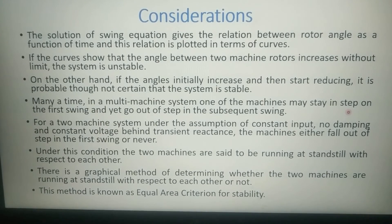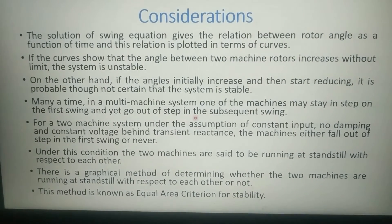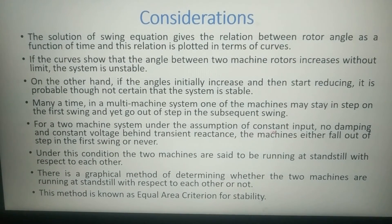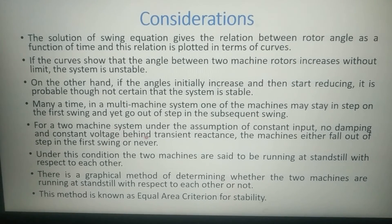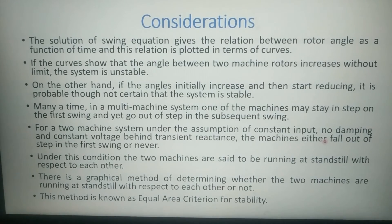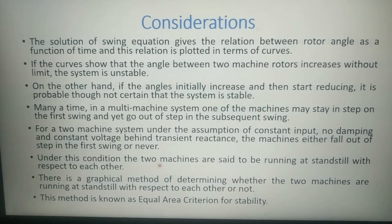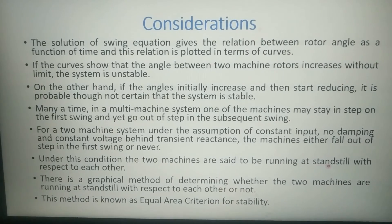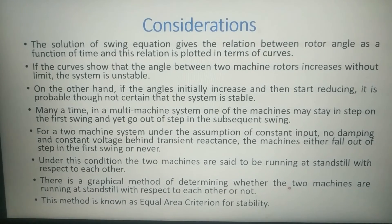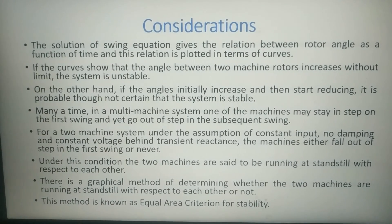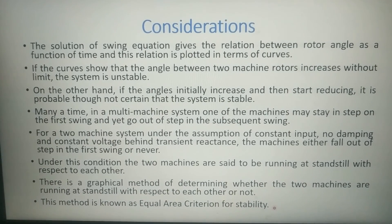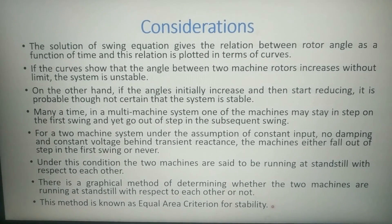In a multi-machine system, one machine may stay in step on the first swing and yet go out of step in subsequent swings. For a two-machine system under the assumption of constant input, no damping, and constant voltage behind transient reactance, the machines either fall out of step in the first swing or never. Under this condition, the two machines are said to be running at standstill with respect to each other. There is a graphical method for determining this — known as the equal area criteria for stability.